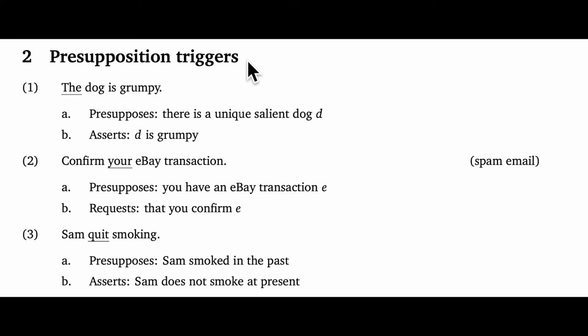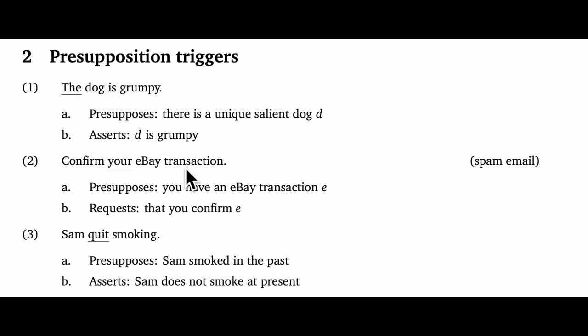There are lots and lots of presupposition triggers in all languages, so I can't possibly enumerate them, but here are a few representative examples. Consider first the definite article as used in a sentence like "the dog is grumpy." The definite article is the presupposition trigger, and so we say that this sentence presupposes that there's a unique salient dog D, and then asserts that D is grumpy. Possessives are also generally triggers and do something similar. "Confirm your eBay transaction" — an example of a spam email technique — presupposes that the recipient has an eBay transaction, and requests that the recipient confirm that transaction.